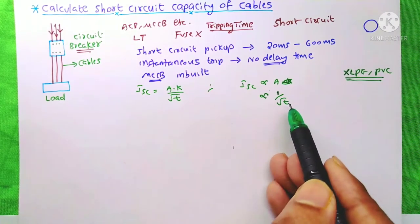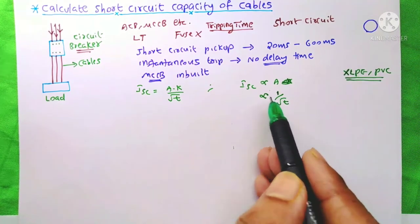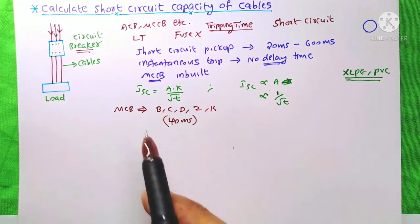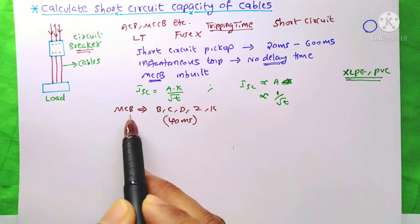It means when the tripping time decreases, the short circuit capacity of the cable increases. When we calculate the short circuit capacity of the cable on